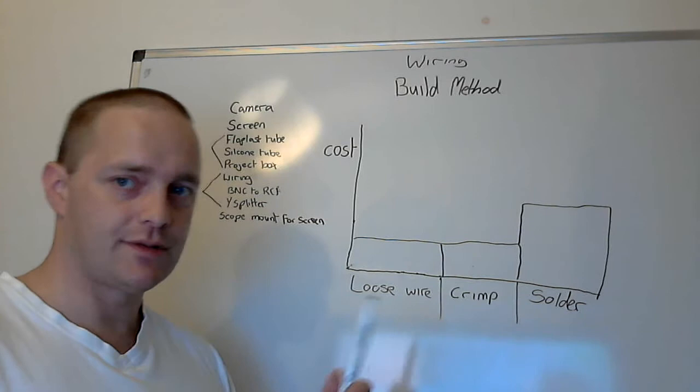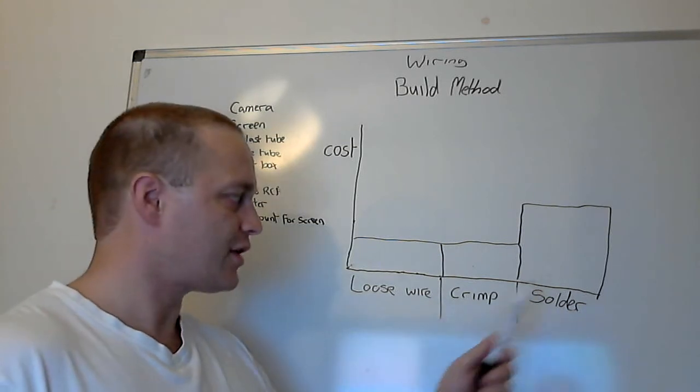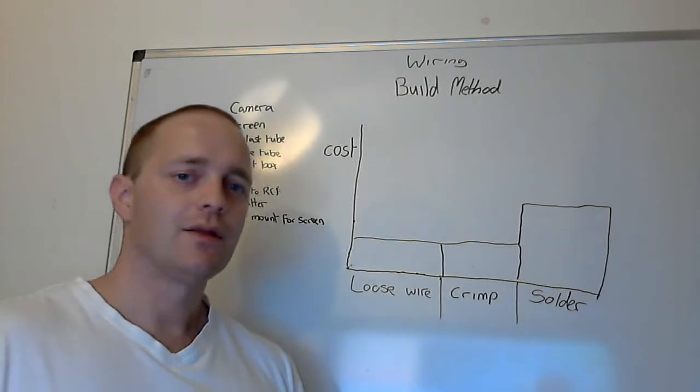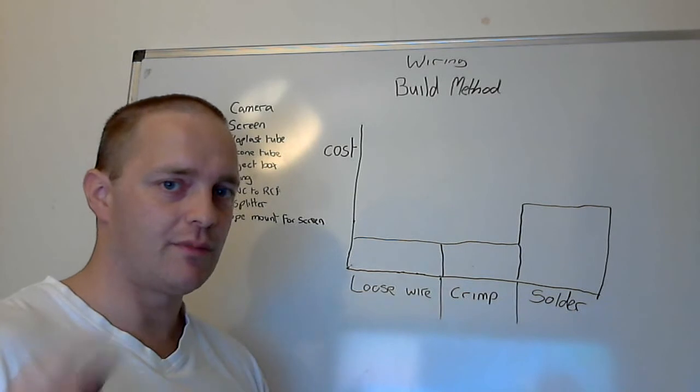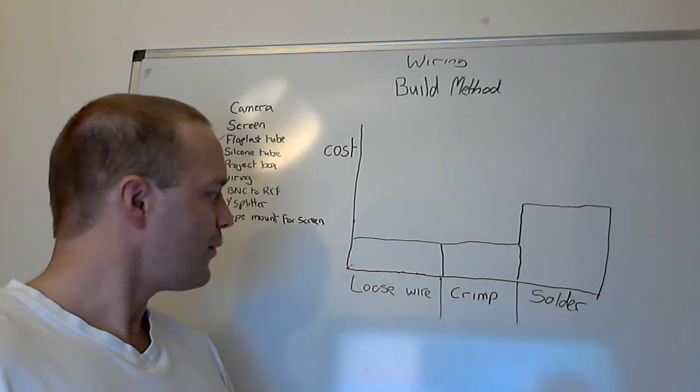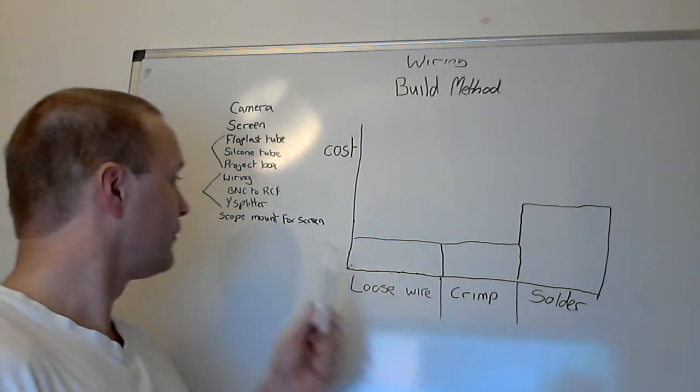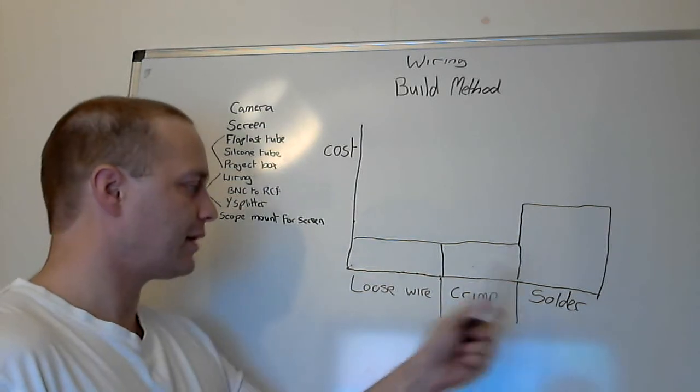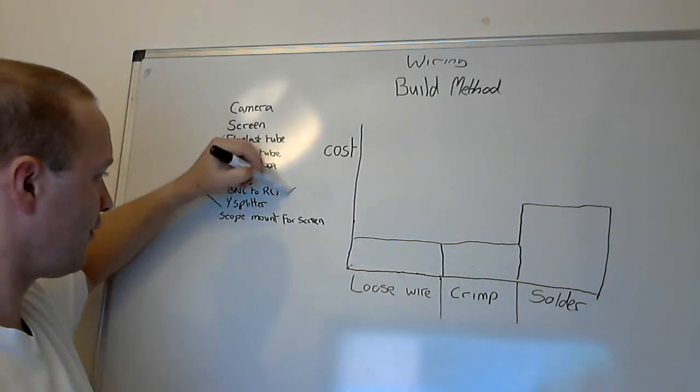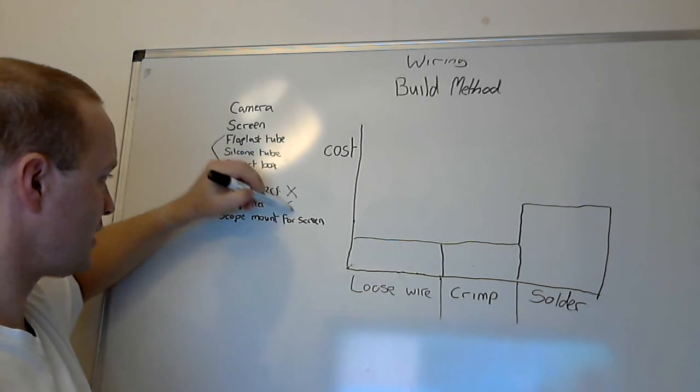These are two areas that are basically your soldering and crimping. The crimping is very loosely turned, but I'll explain that in a second. Whilst you've been initially buying a lot of stuff, if we're going to go down the crimping and soldering, we can actually kill off the BNC and the Y-splitter.